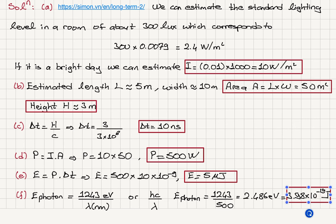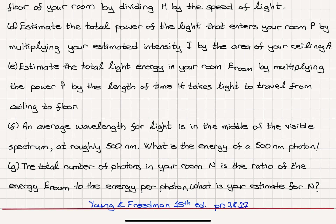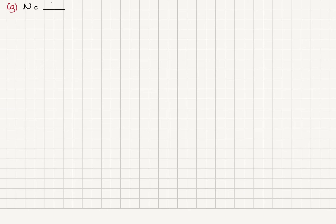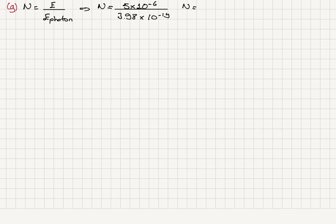That's the energy of the 500 nanometer photon. Finally, the total number of photons in the room N is the ratio of the total room energy to the energy per photon. N equals 5 times 10 to the minus 6 joules divided by 3.98 times 10 to the minus 19 joules, giving us approximately 1.26 times 10 to the 13 photons in the room.